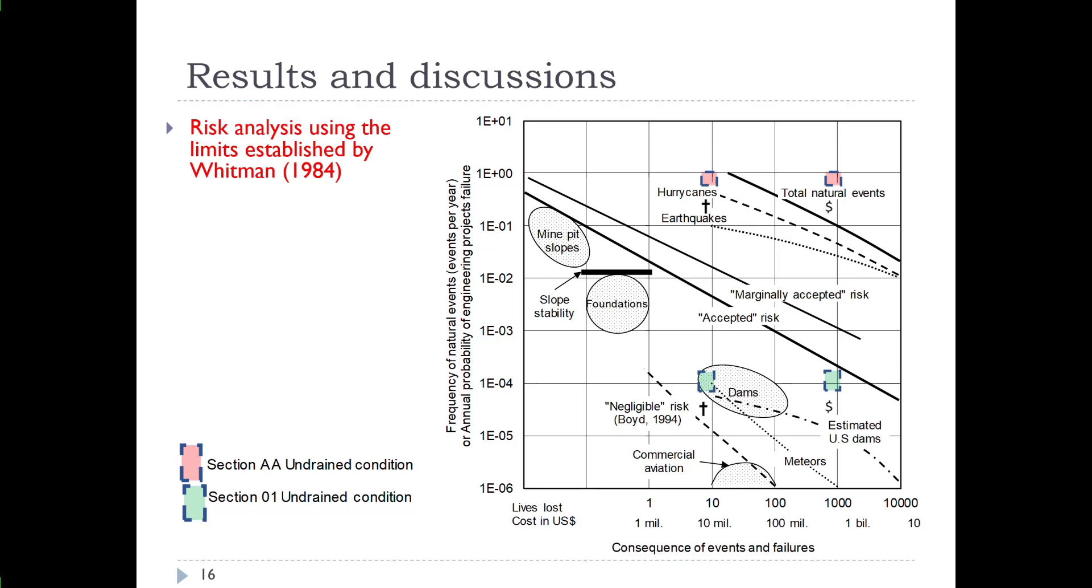However, if we plot section AA in the undrained conditions, we see that the pink areas plot high above our accepted risk and indicate a highly risky, high amount of risk for the event and significant consequence as well. So that's in a zone where we would rather not be, and is consistent with the failure conditions. In this case, the analysis by section AA and undrained conditions appears to represent the scenario that failed in hindsight better than the section 01. You can see the difference in the spatial location between where you analyze the potential failure issues.